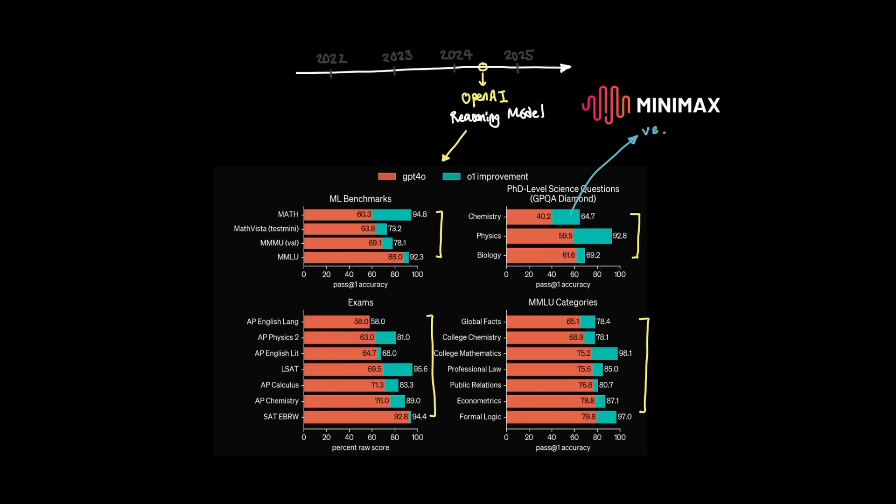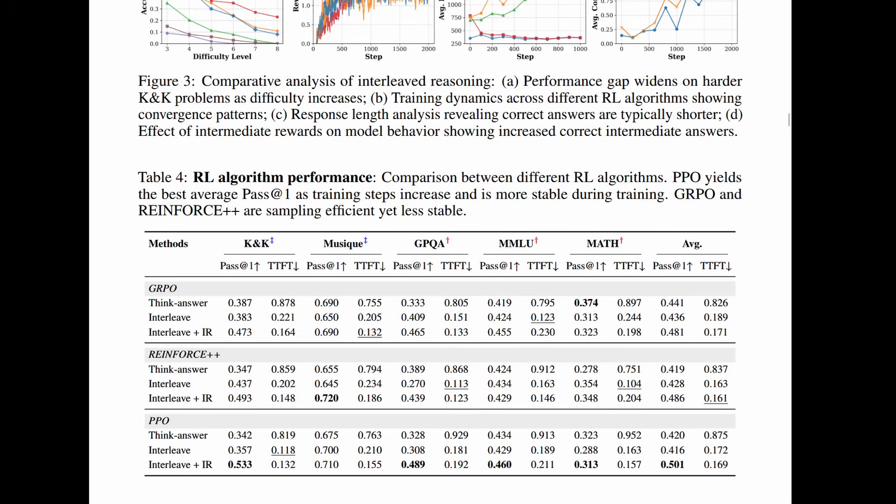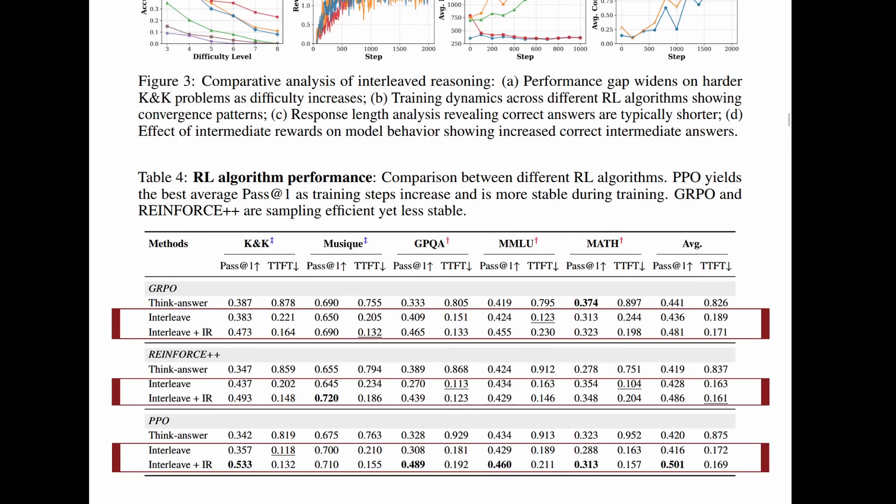So, to compete against this, Minimax M2 had to demonstrate its intelligence just as well as traditional reasoning model. But instead of reasoning in the traditional sense, Minimax opted to do things slightly differently, called interleaved reasoning, which was first introduced back in May 2025 on a research paper that showed their effectiveness compared to a traditional reasoning model like you can see here.